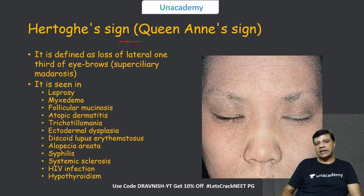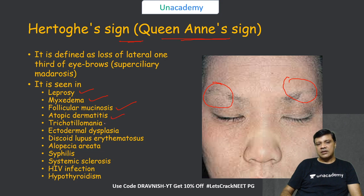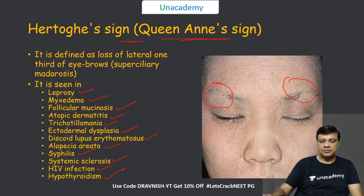The Hertoghe sign or queen's sign is characterized by loss of the lateral one-third of the eyebrows. It can be positive in many conditions: leprosy, myxedema, follicular mucinosis, atopic dermatitis, trichotillomania, ectodermal dysplasia, discoid lupus erythematosus, alopecia areata, syphilis, systemic sclerosis, HIV infection, and hypothyroidism.